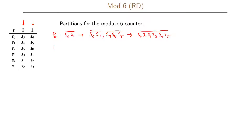Instead, let us try partition p02 starting with s0 and s2. Looking at states s0 and s2 with a zero input, we want s3 and s5 in the same partition, and also s4 and s0 in the same partition. This gives us an extended partition s0, s2, s4 and a new partition containing s3 and s5.